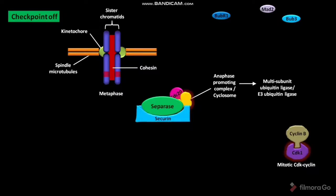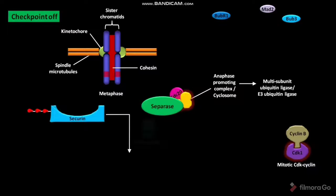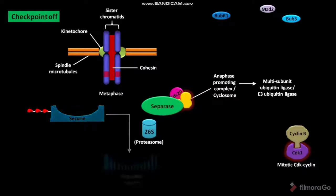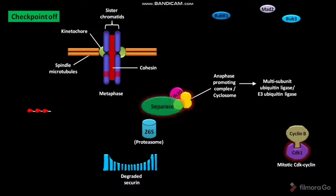The active cyclosome then catalyzes the ubiquitination of securin. The ubiquitinated securin then goes through 26S proteasome and forms degraded securin. This degradation of securin activates the protease separase.